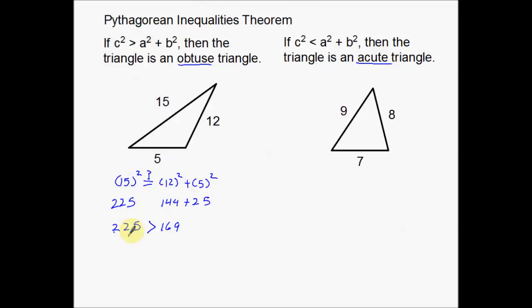So that means that this c squared side, now remember back up here, this is the c squared. That means the hypotenuse is way too big. 225 is bigger than 169. 225 is way too big. This 15 is way too big.